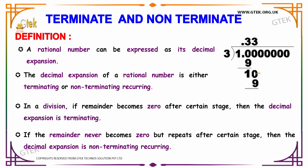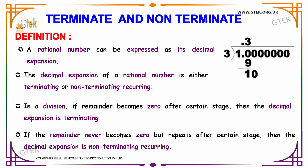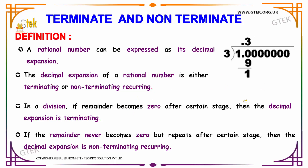In terms of division, if the remainder becomes 0 after certain steps, then the decimal expansion is considered to be terminating. In the same way, if the remainder never becomes 0 but repeats after certain steps, then we can say the decimal expansion is non-terminating recurring.